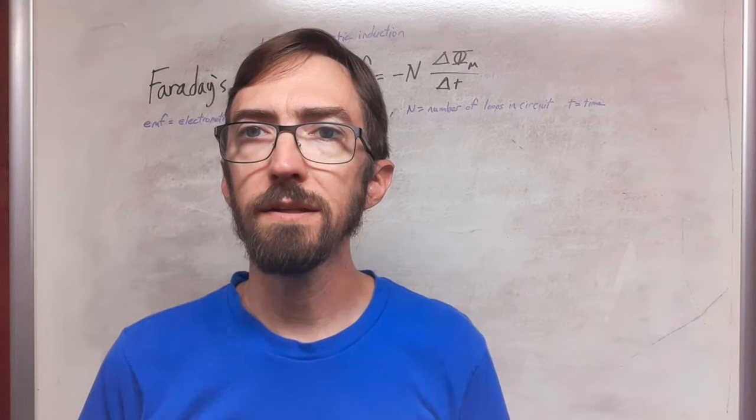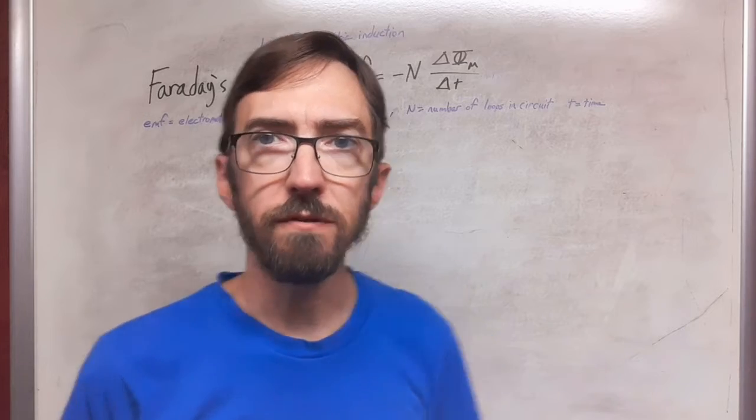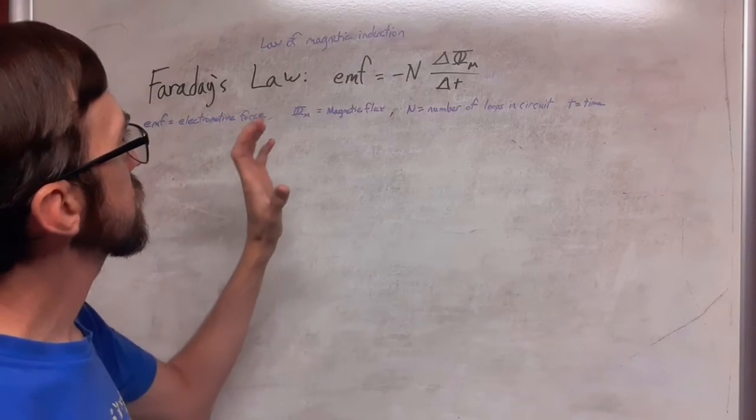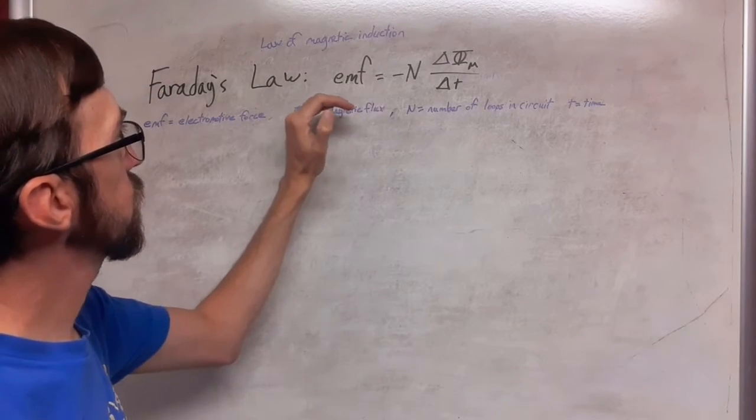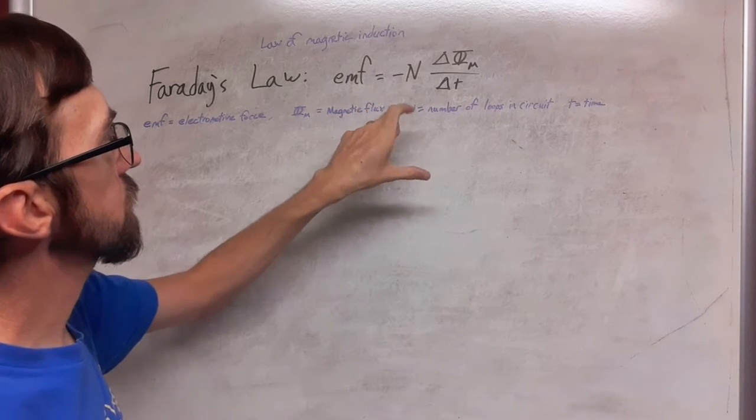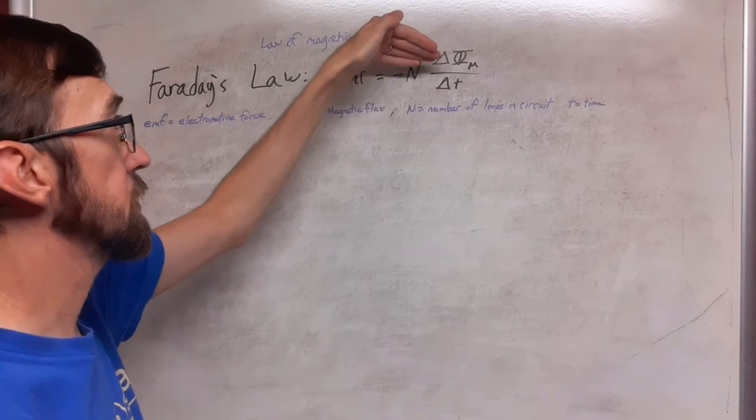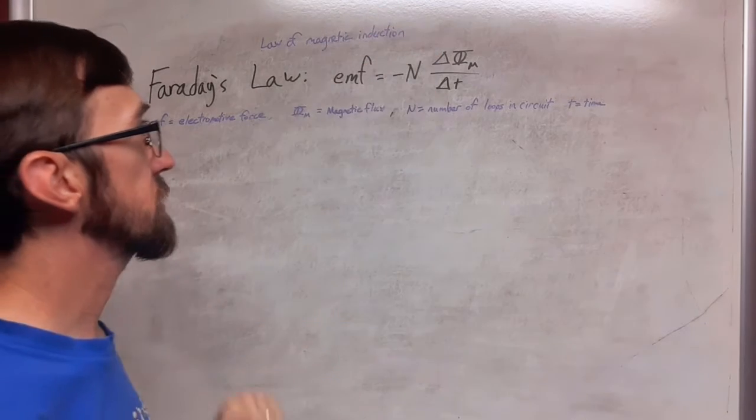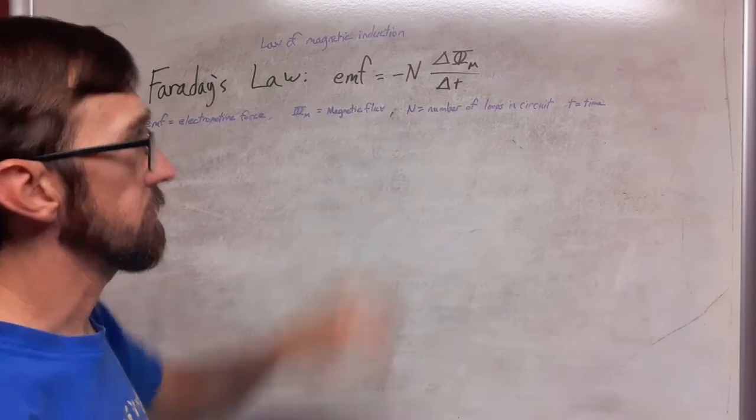We are going to start with the law of magnetic induction by using Faraday's law, which tells us that the electromotive force is equal to the number of loops in a circuit times the ratio between the change in magnetic flux and the change in time, and this is a negative scalar.